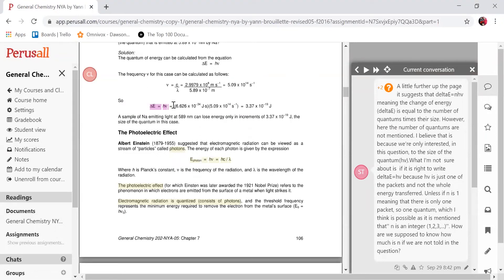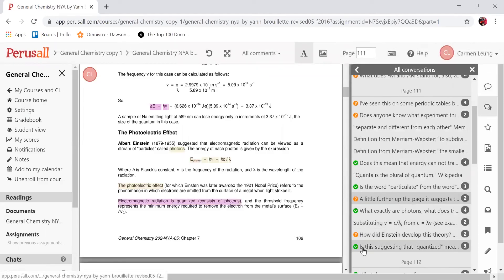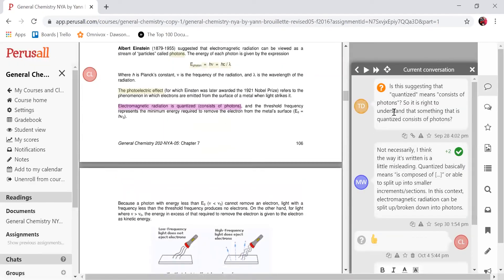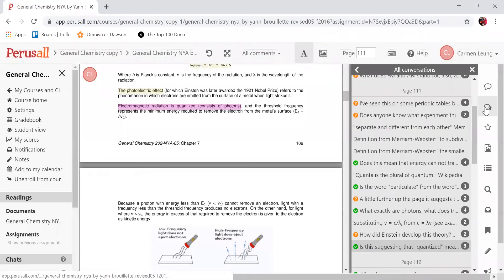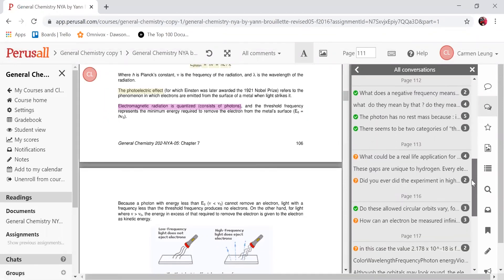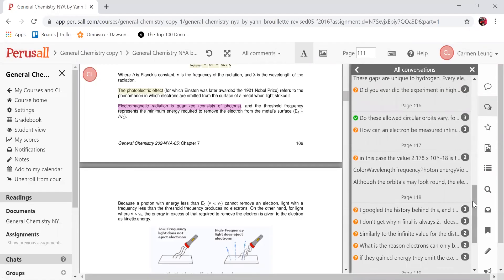Check marks indicate when a certain comment was helpful for a student. There was a question that was asked and a student answered it. Two other students found this comment helpful. By going back to the list of conversations, you get an idea of where the hot spots were in the reading assignments.